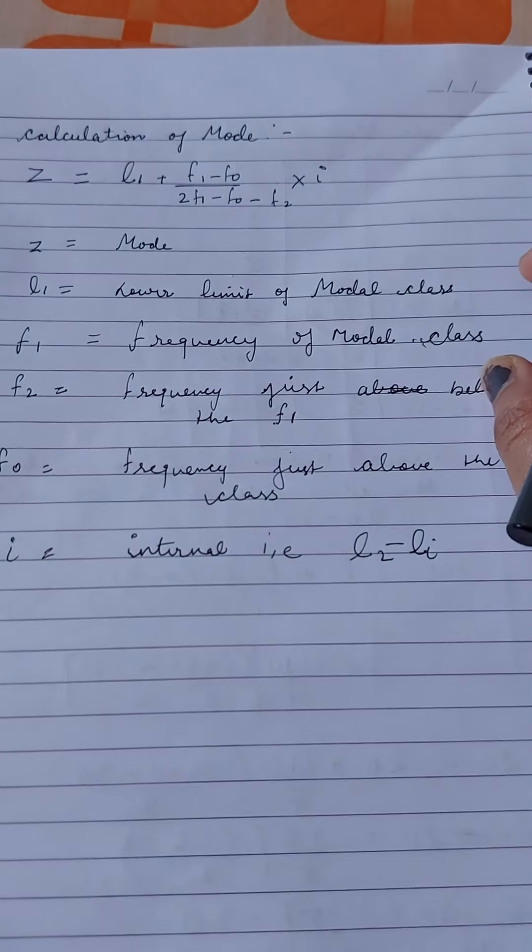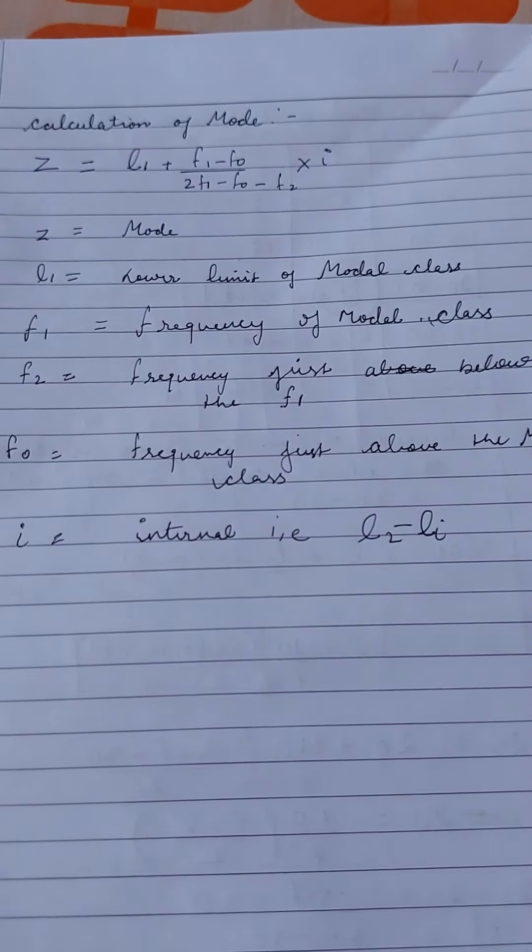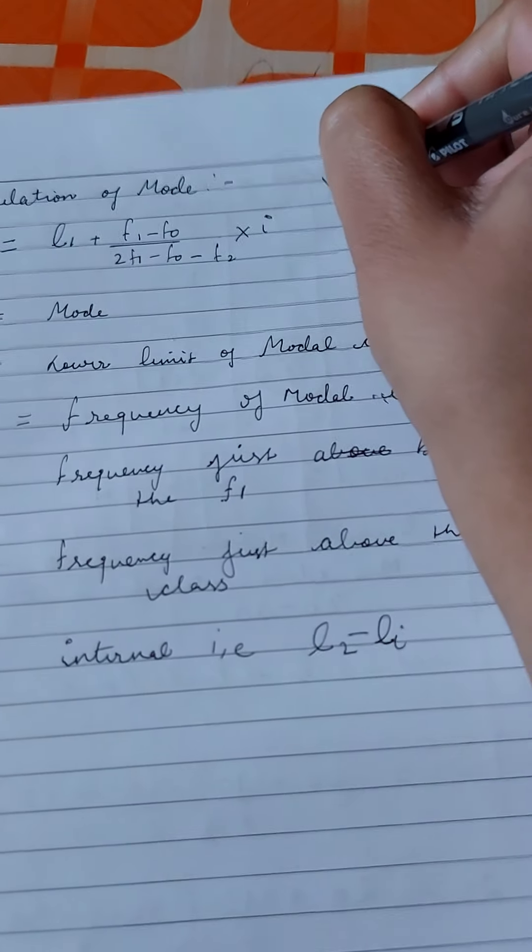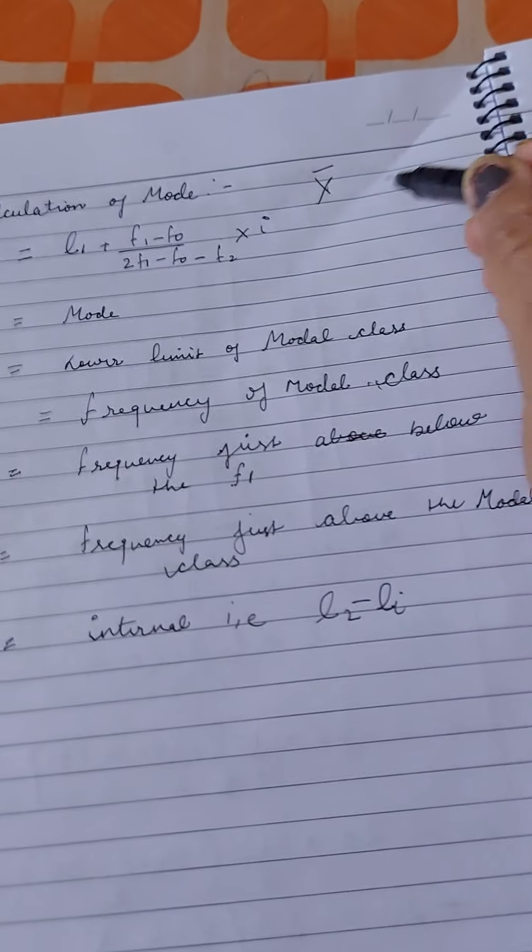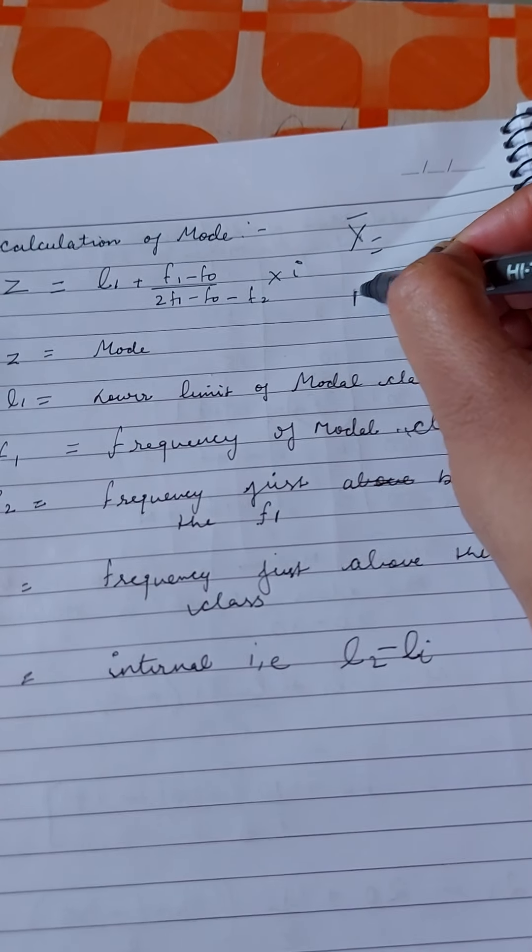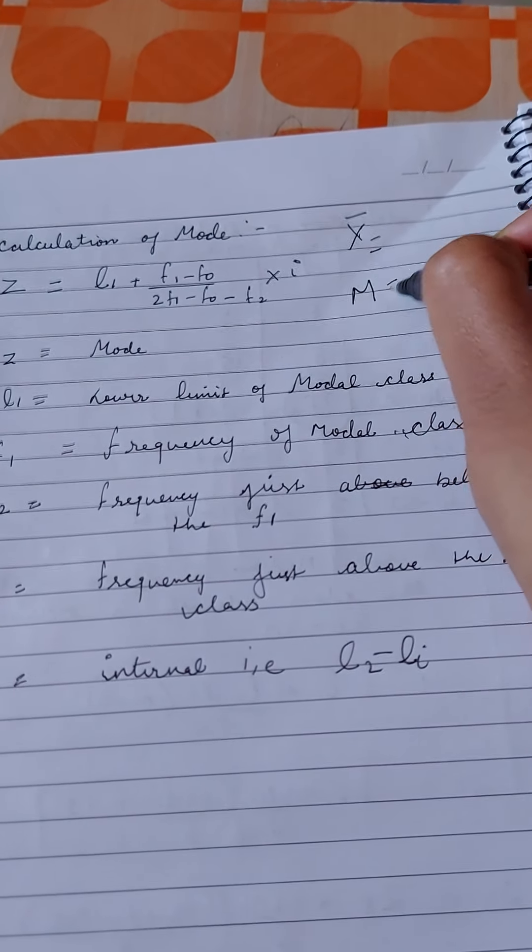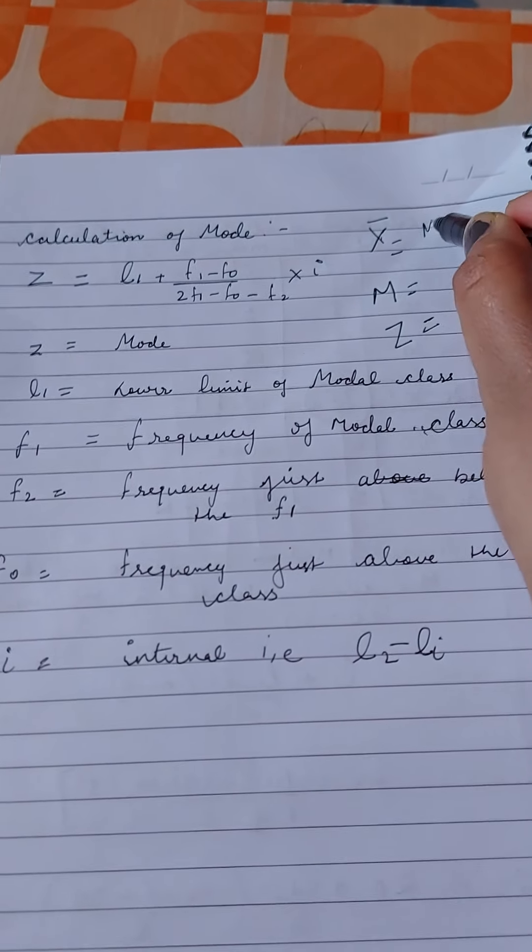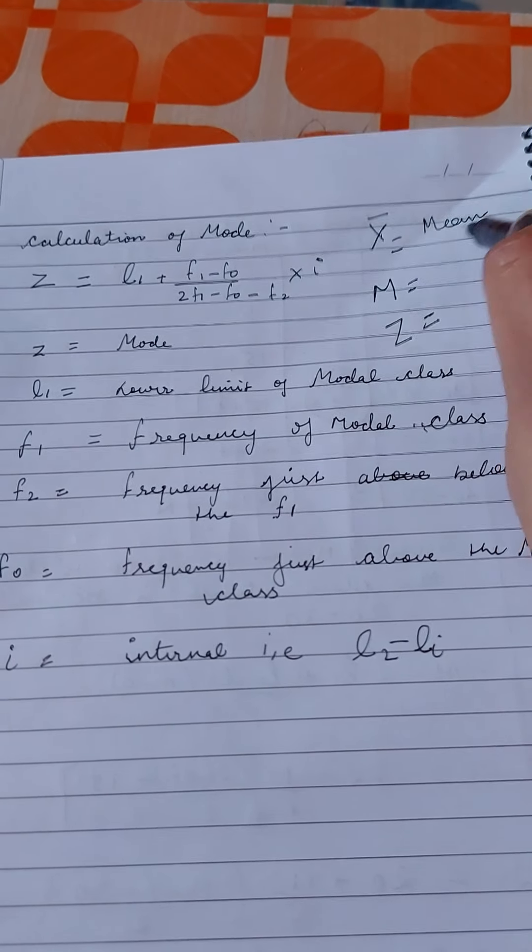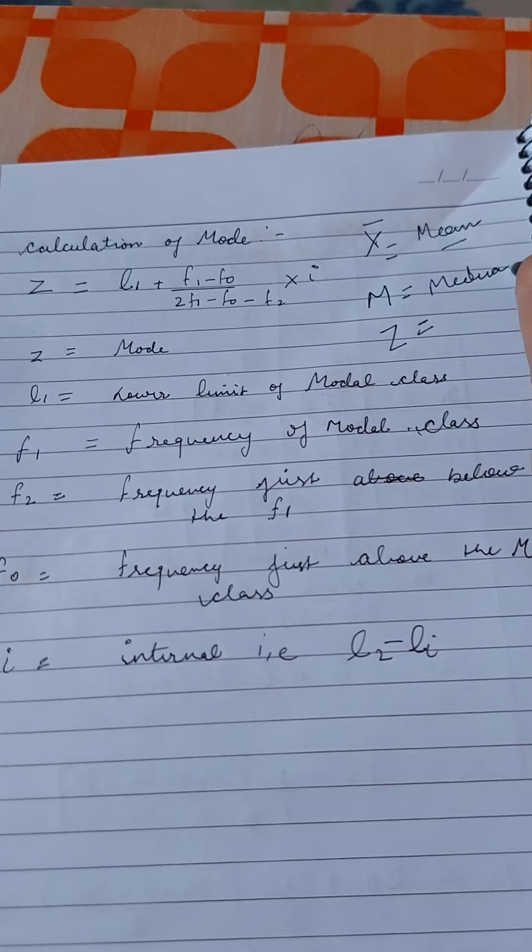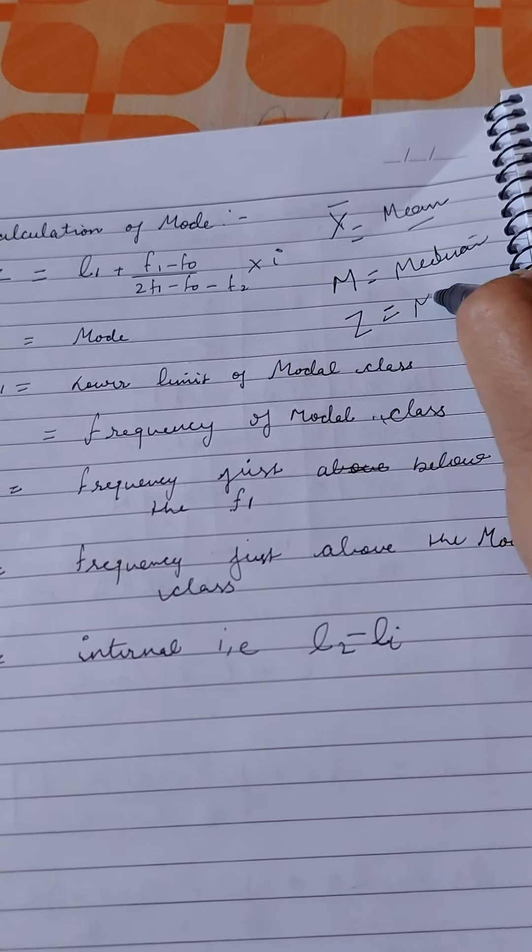In the next video that I will upload, we will study about mode. Till now, what have we studied? We studied mean. Mean's abbreviation is x bar. Median's abbreviation is m. And mode's abbreviation is z. So x bar is your mean, M is your median, and z is your mode.